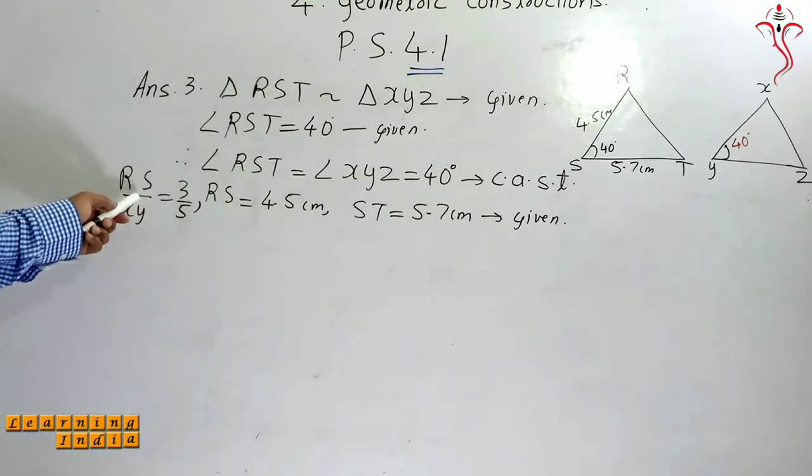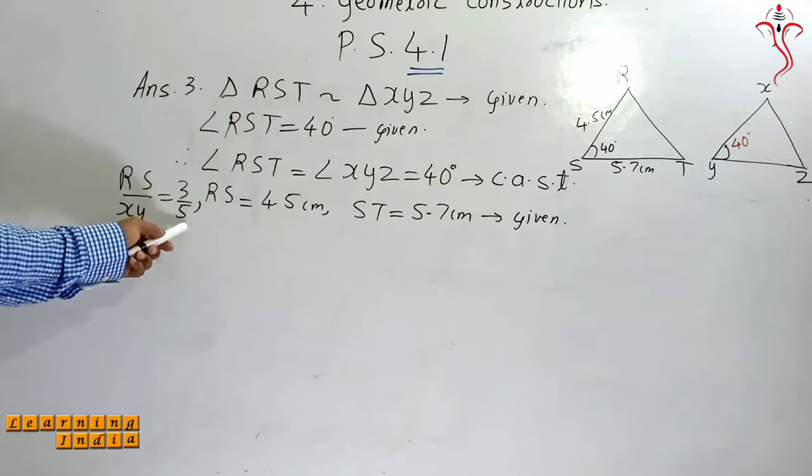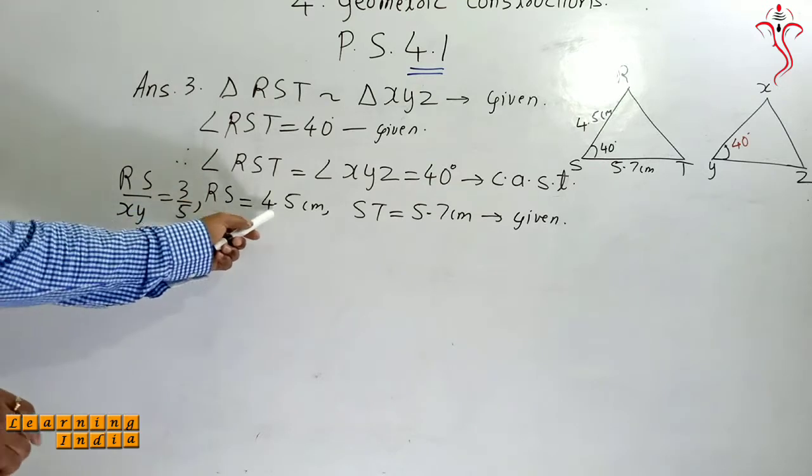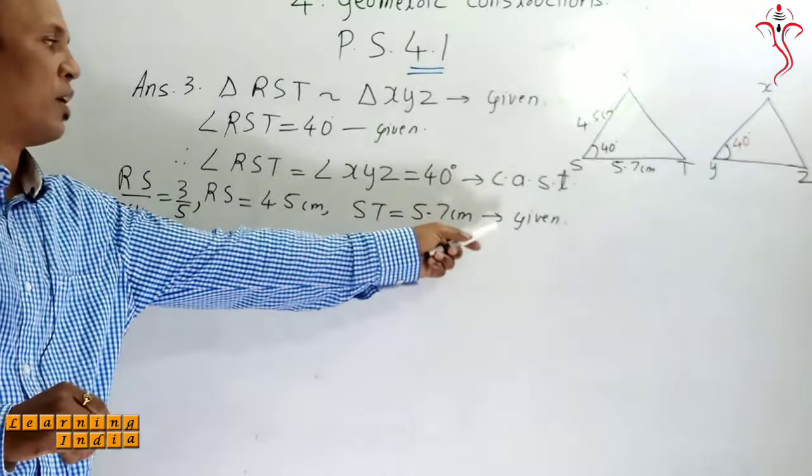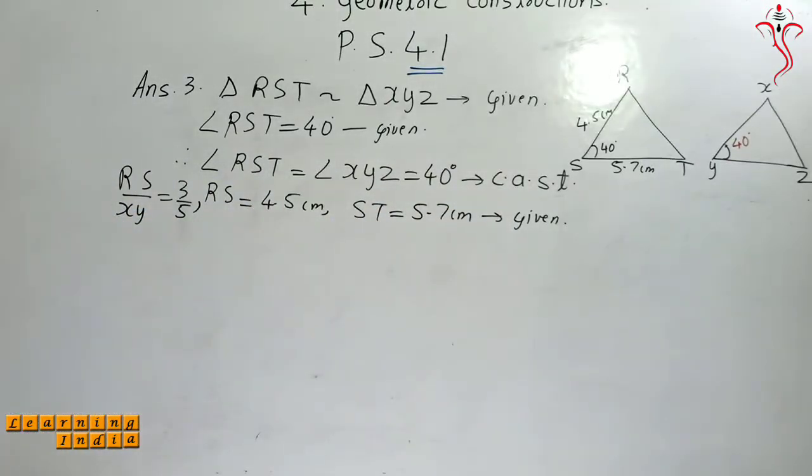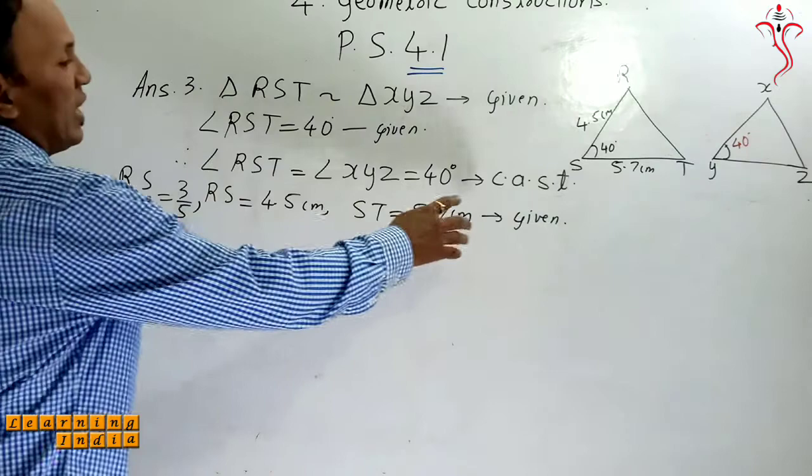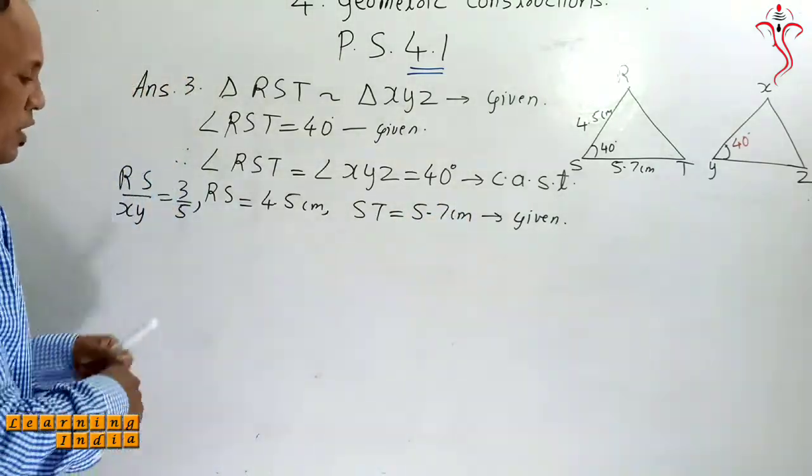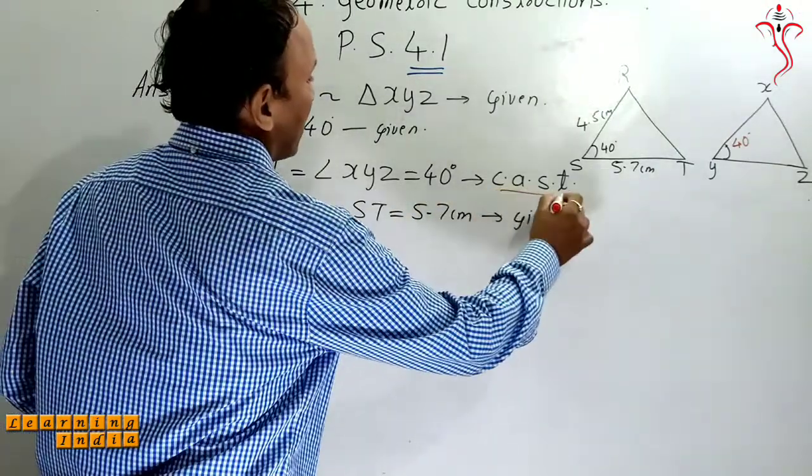So RS upon XY is equal to 4.5 cm and ST is equal to 5.7 cm. They have given it to us like this way. So RS upon XY we have got it here.